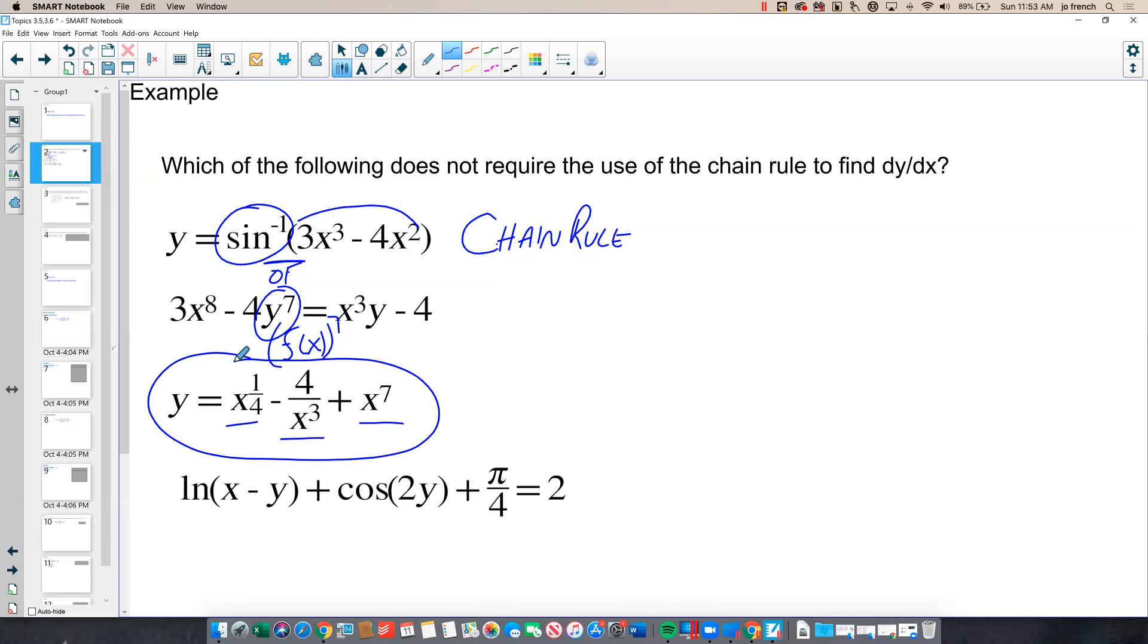This last function, natural log of x minus y plus the cosine of 2y plus pi over 4 equals 2. There were two places in this verbal expression of this relationship where I had to say of, and then instead of just saying of x, I had an expression I needed to also take the derivative of. Natural log of x minus y and the cosine of 2y. Both of these would require an application of the chain rule before I could finally find dy dx.